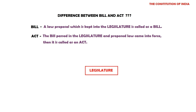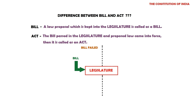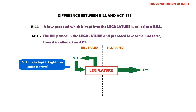Let's consider the legislature. A bill is kept into the legislature and it is passed, then the bill is turned into an Act. Suppose the bill fails — it can be re-kept. A bill can be kept in the legislature until it is passed. A passed bill is called an Act.